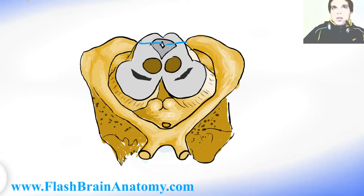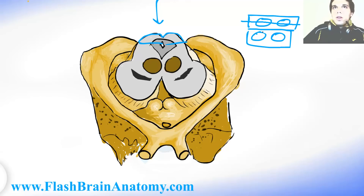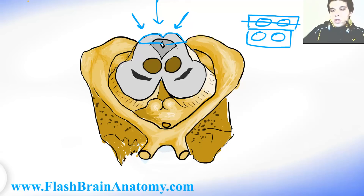Now in the tectum, you can notice that it has a shape like this. If you look from behind, from this perspective, you would see four round bodies. Those bodies are called the colliculi. They are divided into superior ones and inferior ones. So we have the superior colliculi and the inferior colliculi. If we make a cut over here, you would see two superior colliculi just like they are illustrated here. Those two upper colliculi are important for vision and vision reflexes, and the lower colliculi are important for sound reflexes.